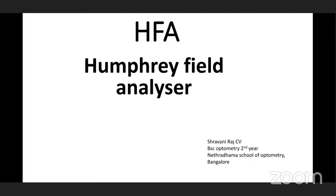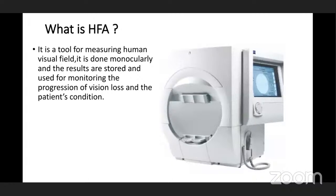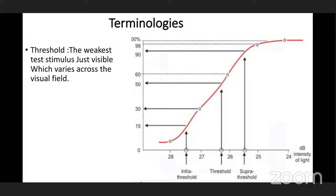What is HFA? It is a tool for measuring human visual field. It is done monocularly and the results are stored and used for monitoring the progression of vision loss and the patient's condition. The main aim of the visual field analyzer is to measure retinal sensitivity. Before going to the procedure, we need to know some terminologies.